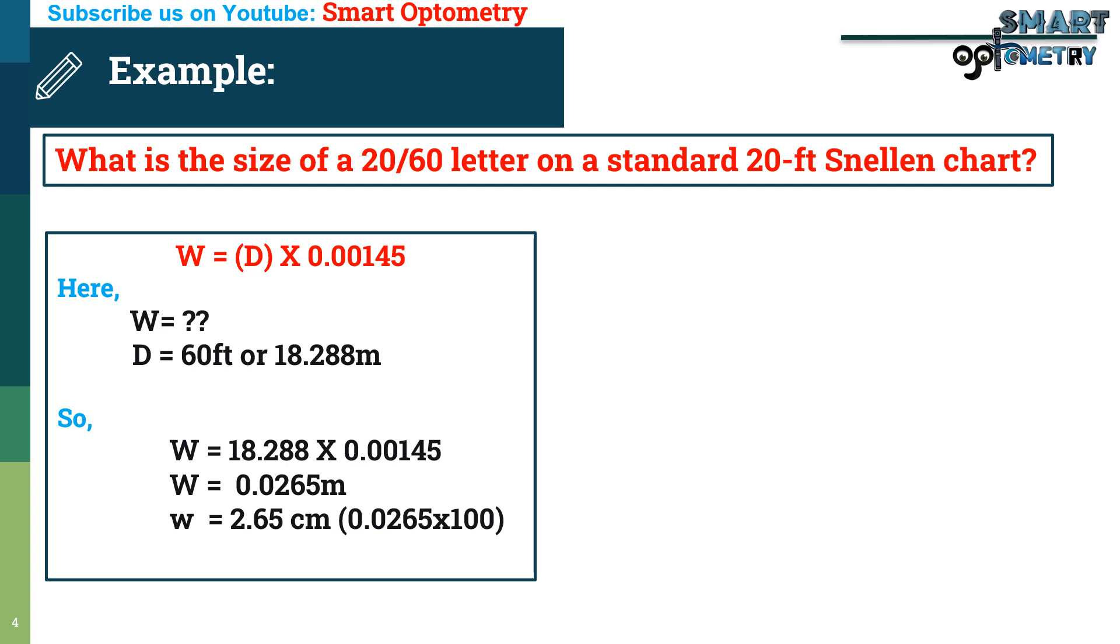Or, W equal to 2.65 centimeter. When we multiply meter by 100, we get centimeter. Or, W equal to 26.5 millimeter. When we multiply centimeter by 10, we get millimeter.